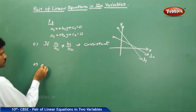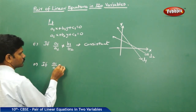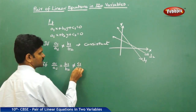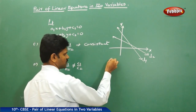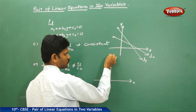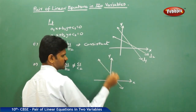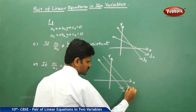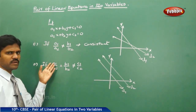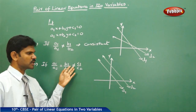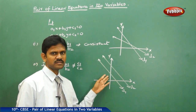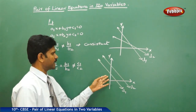Case 2: if A1 by A2 is equal to B1 by B2 but not equal to C1 by C2, then the nature of the lines are parallel lines. For parallel lines, there is no solution, which is called inconsistent.